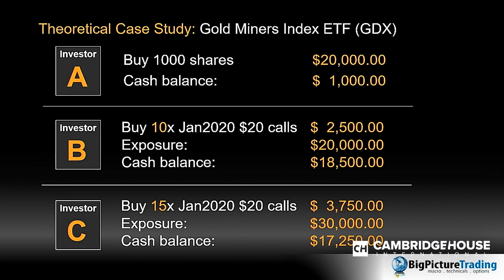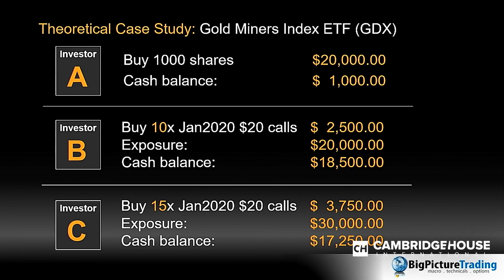Investor C wants to leverage up and control more stock than they could buy without margin. Investor C purchases 15 call options, giving them control of 1,500 shares of GDX — equivalent to $30,000 of stock. At $2.50 a share, that costs them $3,750. Remember, all three investors started with $21,000, so Investor C is left with $17,250 in cash.